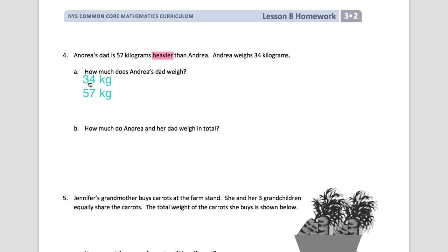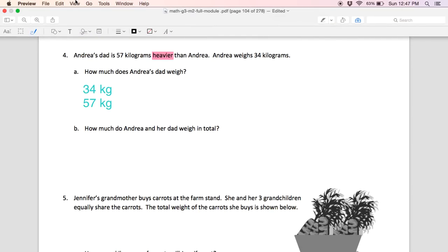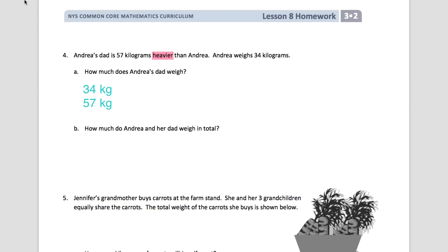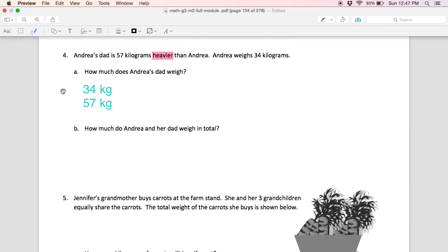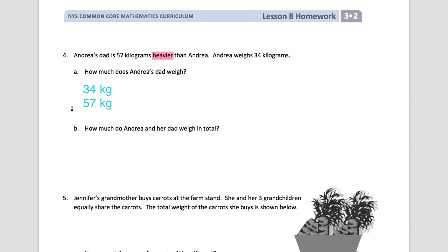We know that Andrea weighs 34 kilograms and her dad is 57 kilograms heavier. We are going to take those two numbers and we are going to add them together. So I'm going to see really quickly, thanks for hanging out with me, if I can write those numbers in again like I did before. I would like to write a plus sign. There we go. And finish it.